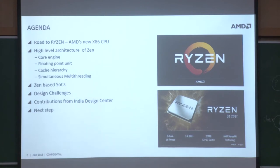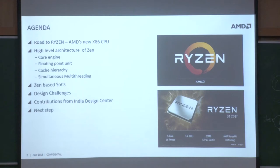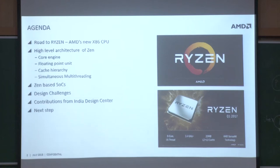Ryzen is a new CPU that came up last year. It's a ground-up design, which in the processor world is a big thing — it takes many years of effort. A lot of times what we do is one design and then incrementally improve it, but this one was a major change from the previous design. My agenda covers the core engine, floating point unit, execution unit, cache hierarchy, SMT — which is the first complete simultaneous multithreading in an AMD core — Ryzen-based SOCs, design challenges, contributions from the India design center, and what we're doing right now.